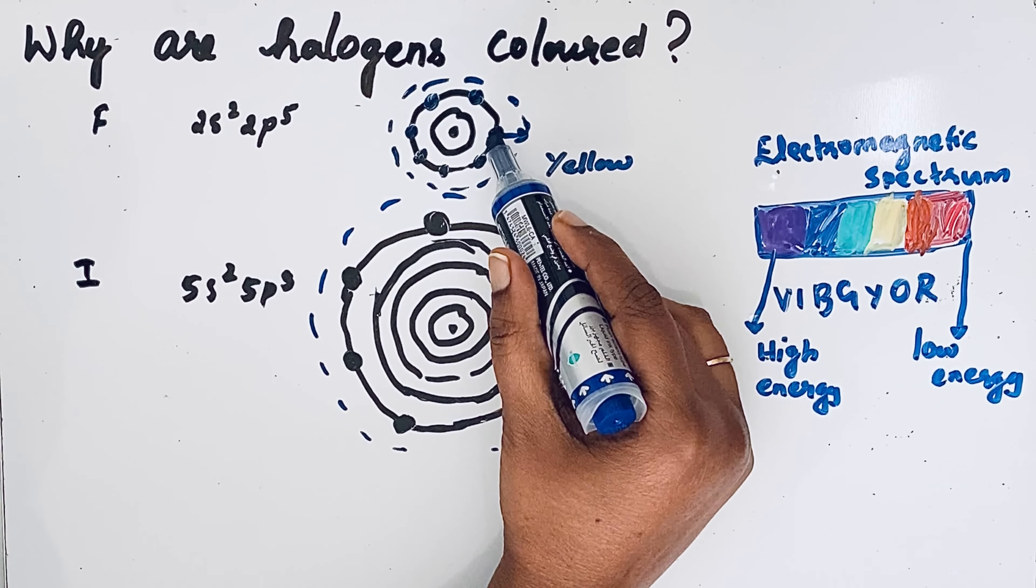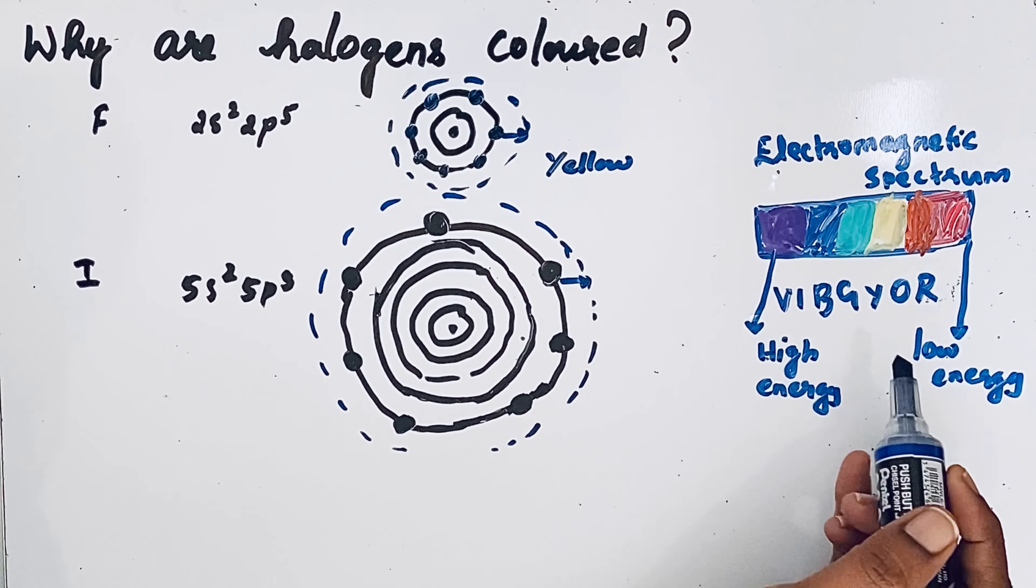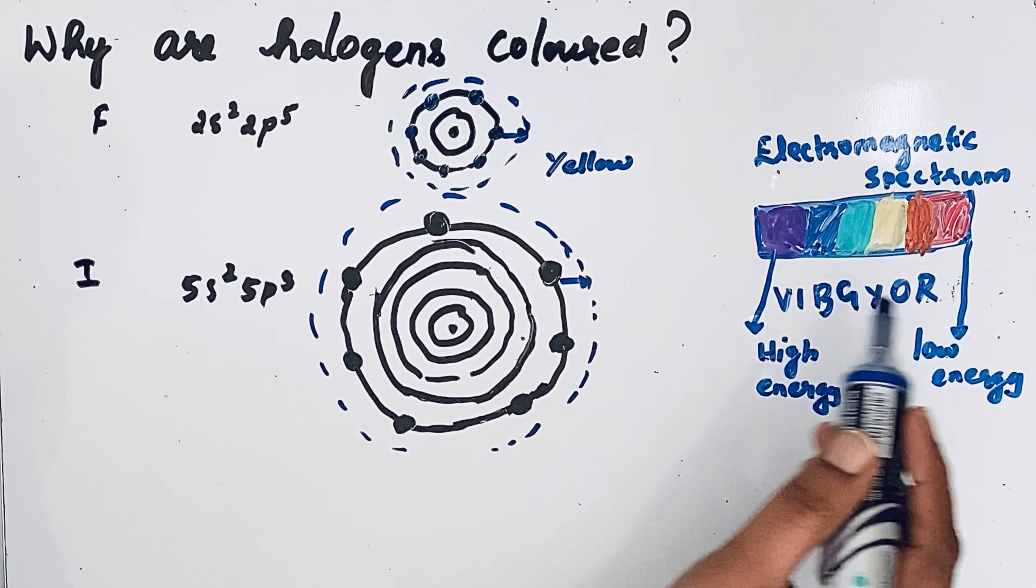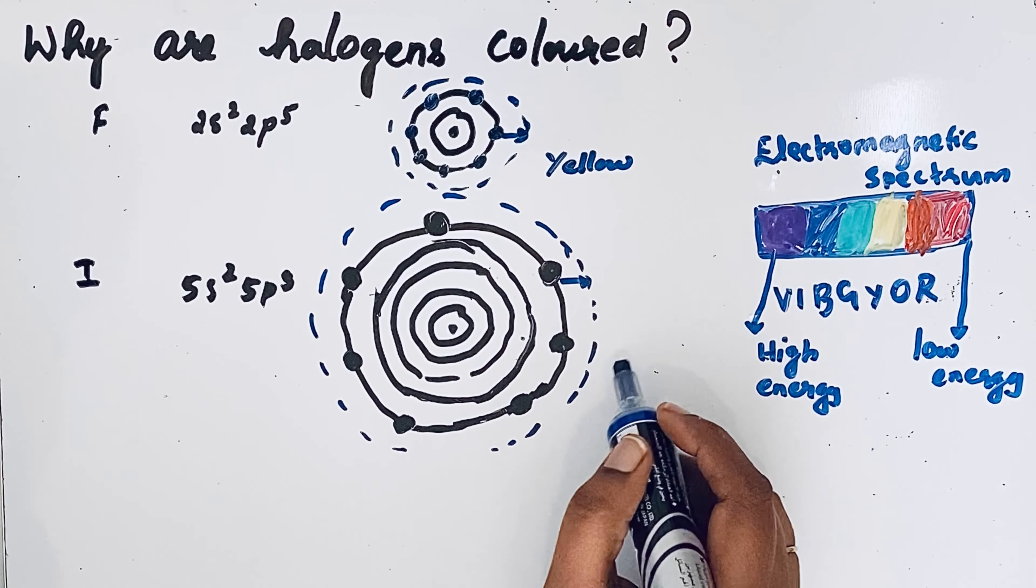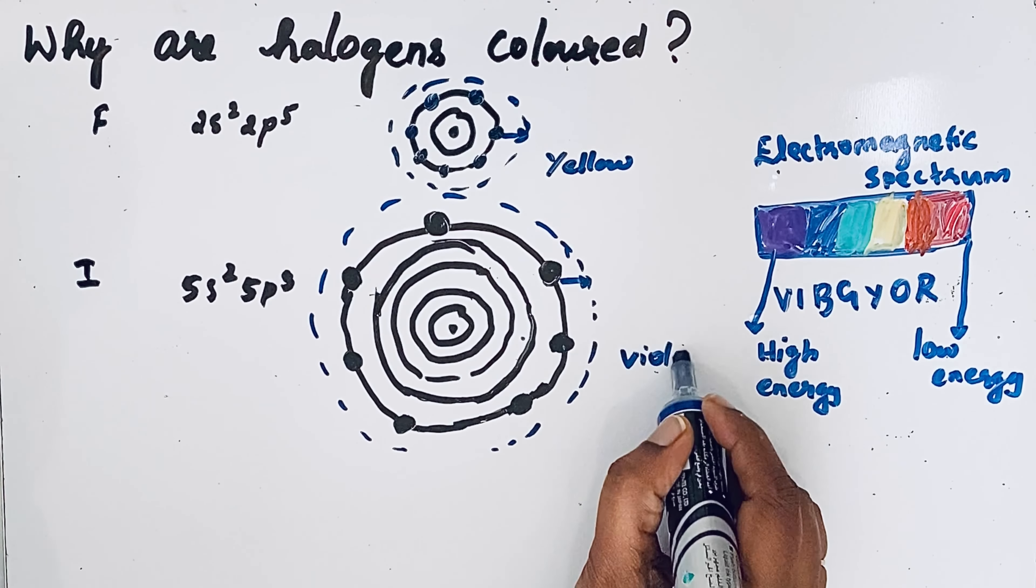Due to that, these valence electrons need less energy rays like red light and emit high energy violet rays. That is why iodine is violet in color.